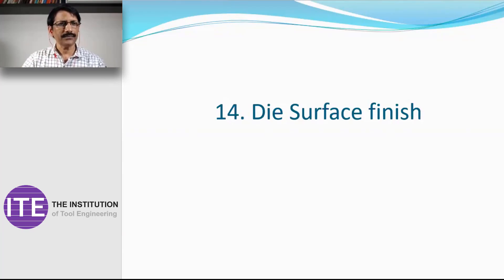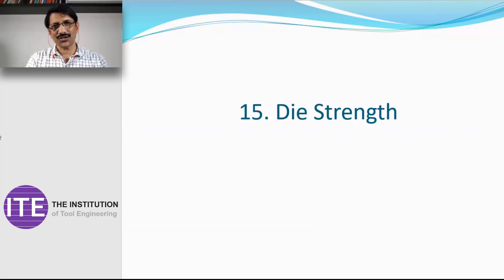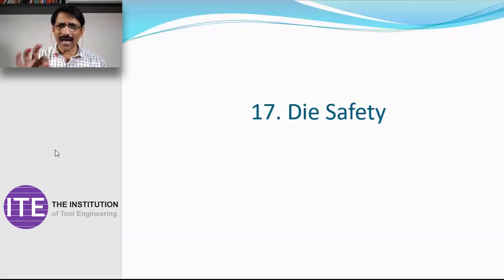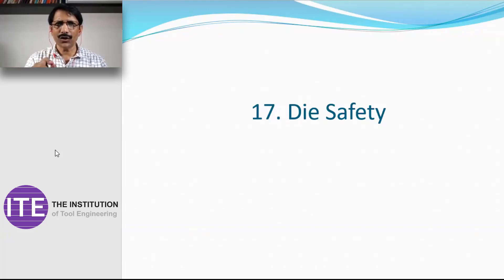Die strength is a huge topic. It involves proper material selection, a proper factor of safety, no weak sections, proper hardness, heat treatment, and handling. Die safety is a basic design parameter applicable to all types of design, whether in R&D or robotics. A simple tip: when a plate is manufactured, always add a note to remove sharp edges and burrs — or provide a fillet — as this relates to die safety.